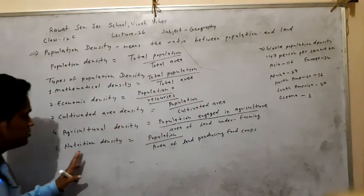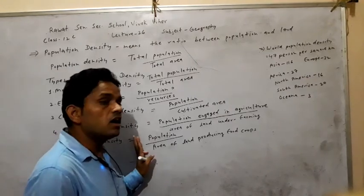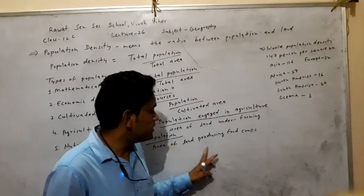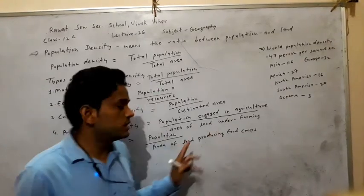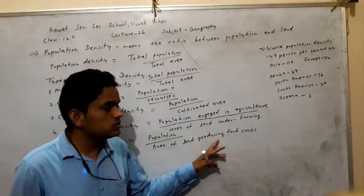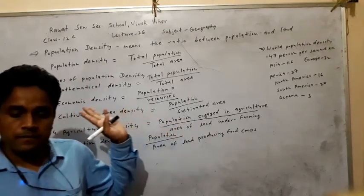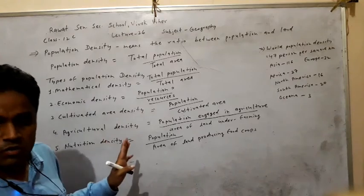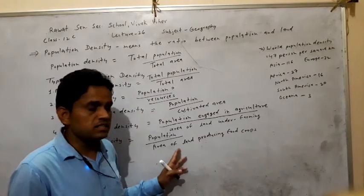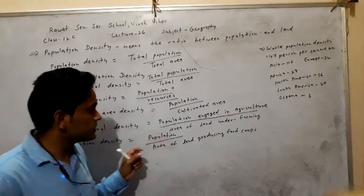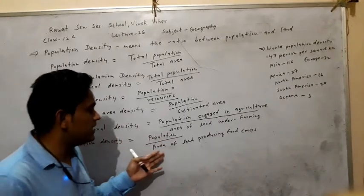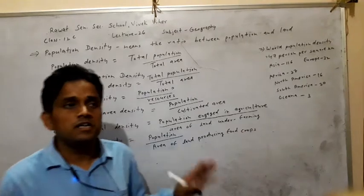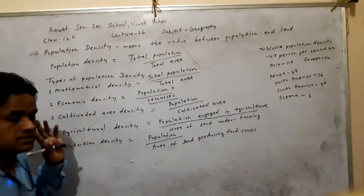The last type of population density is nutrition density. Here the ratio is between the total population and the area of land producing food crops. So the area of land producing food crops and the total population of that land are both considered in nutrition density.